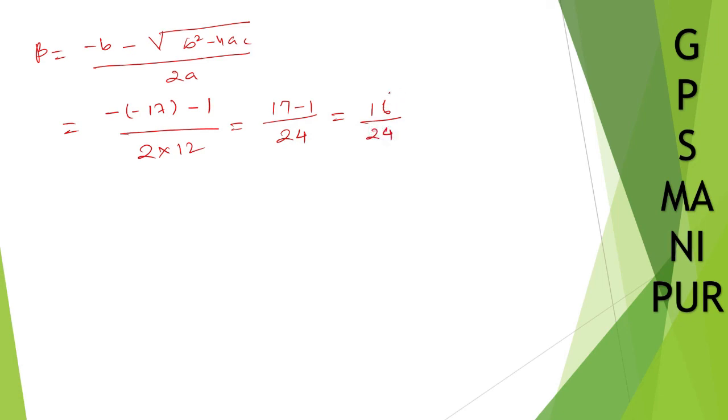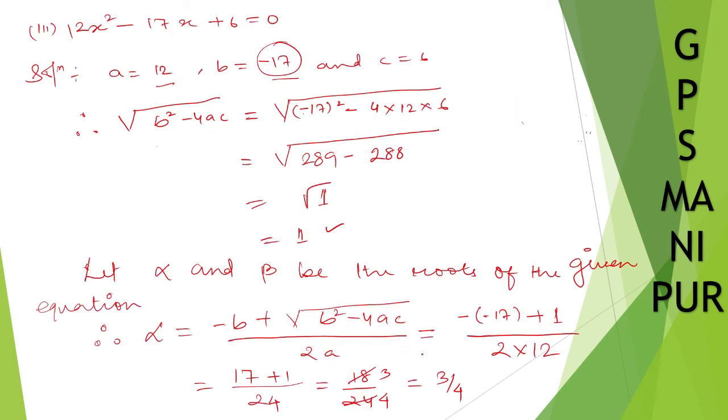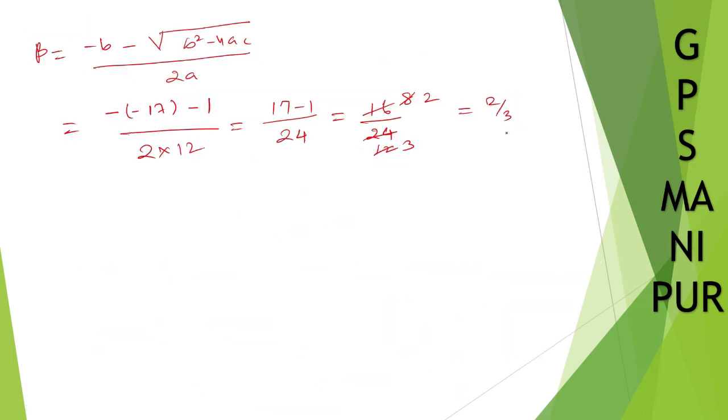So 17 - 1 it is 16 divided by 24. I can cancel: 2 into 16... 2 into 8, 4 into 12. So it is 2 divided by 3. So we got 3/4 and 2/3 as the answer. So therefore 3/4 and 2/3 are the roots of the given equation.